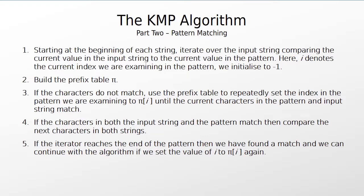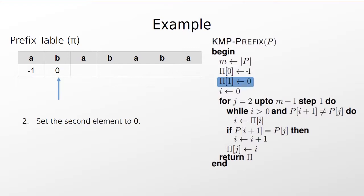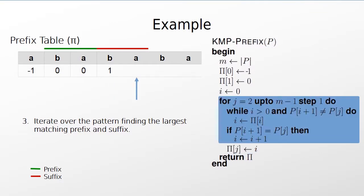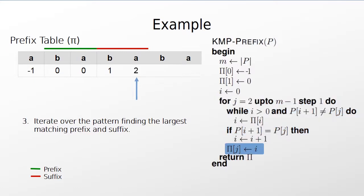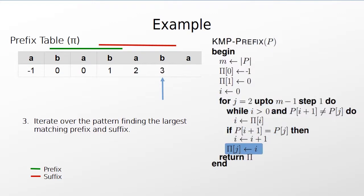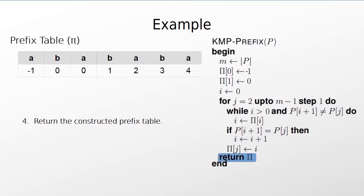We can then use the prefix table to set index i so we can continue searching. This will now be demonstrated by an example. We initialise the first element to minus 1 and the second element to 0. We now find the largest prefix and suffix — here it is only the character 'a', so we set the current element in the prefix table to 0. Examining the next character, the largest prefix-suffix combination is 'ab', so we set the current value to 1. At the next element, 'ba' is now the largest prefix-suffix, and as the index of the last element of the prefix is 2 we set this value to 2. The prefix and suffix are now the substring 'bab' and the value is 3. The final prefix and suffix are 'baba', so we set the current value to 4. We have reached the end of the pattern so we can now return the prefix table.